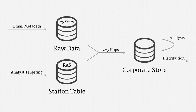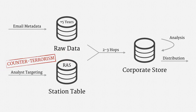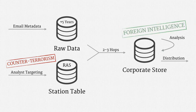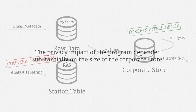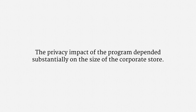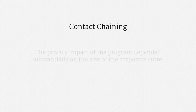I want to emphasize a part of this process that is incredibly important and incredibly subtle. When first selecting targeting criteria, analysts were limited to counterterrorism investigations, and they needed reasonable, articulable suspicion. However, once data was in the corporate store, it appears to have been fair game for any foreign intelligence purpose, and analysts didn't need to satisfy the reasonable, articulable suspicion standard, or even the relevance standard. Put differently, the privacy impact of the program depended substantially on the size of the corporate store — the information that analysts could more routinely access. And the size of the corporate store, in turn, depended substantially on the NSA's so-called contact chaining procedure.